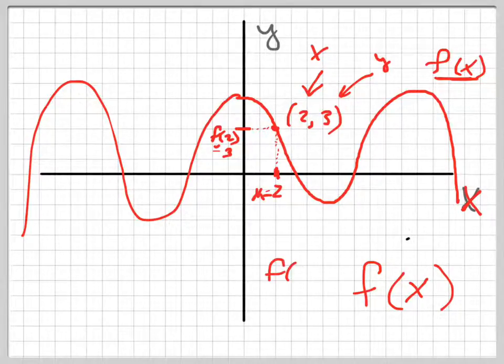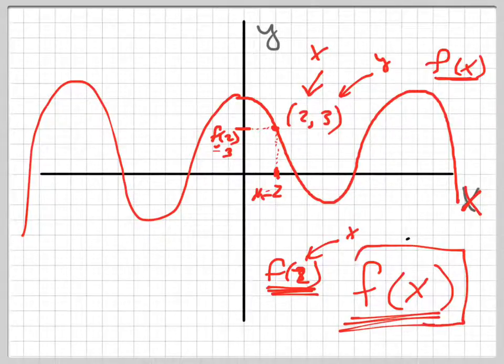That's what f of 2 actually means. It means what is the function value when x is 2. So see how that's a very concise piece of notation. f parenthesis x means f of x, which means the function of x. So what's the function of 0?